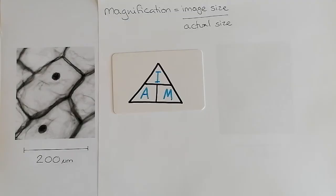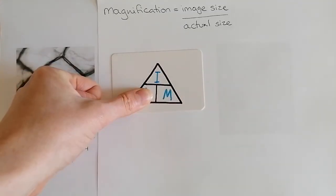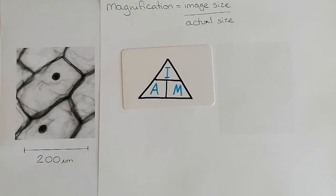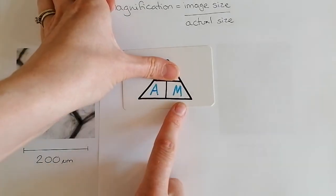If we were trying to calculate the actual size of something, we would cover over the one that we don't know and have image over magnification. And if we were trying to work out what the image size was, then we would cover image and we would have actual times magnification.